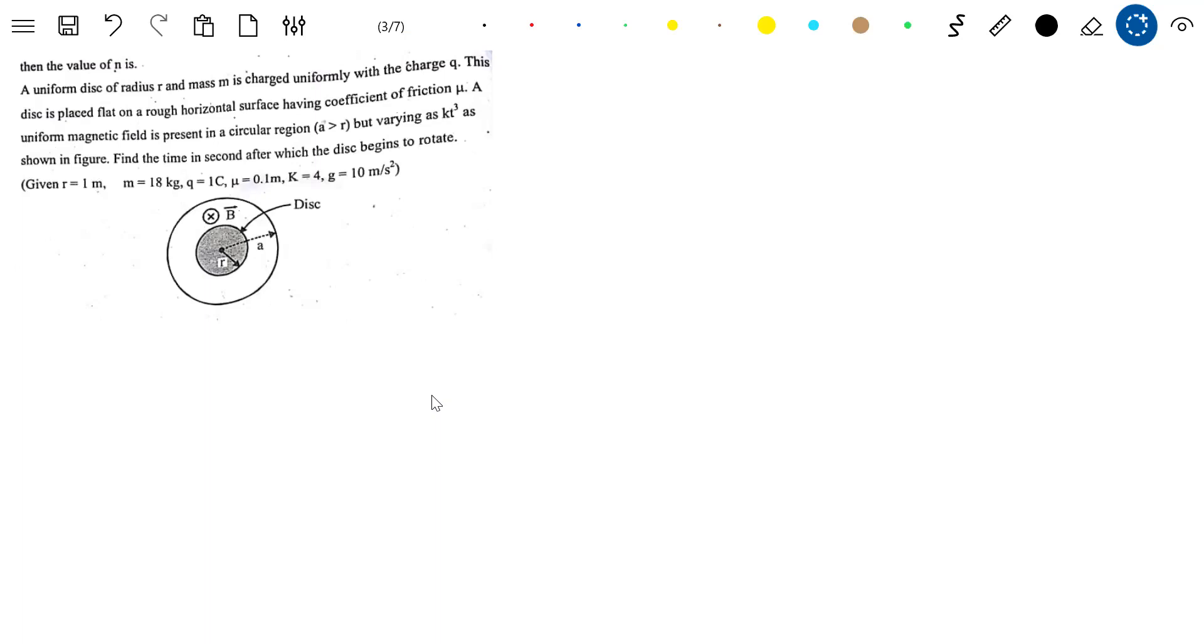This disk is placed on a rough or gentle surface where the B bar everywhere is varying. Having coefficient of induction in a circular region of radius greater than R, but varying as KT cubed. Find the time in seconds after which the disk begins to rotate.